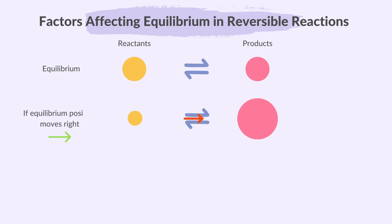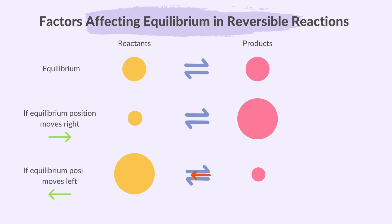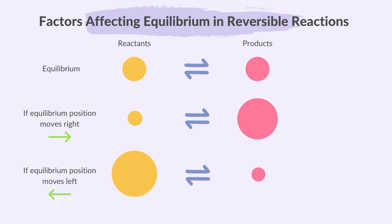If the equilibrium shifts to the right, more products are made and reactants decrease. If it shifts to the left, more reactants are present and products decrease.